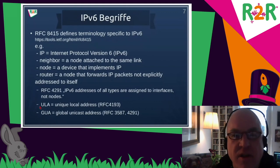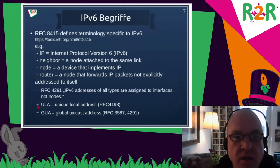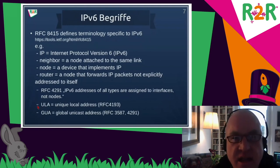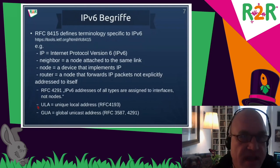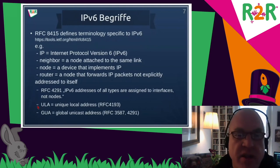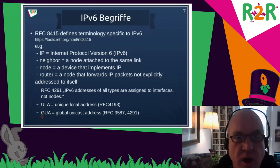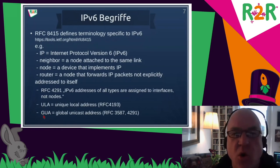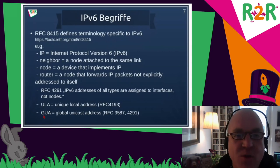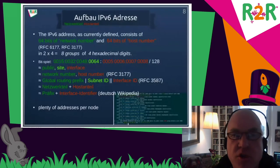We also really need the ULA — Unique Local Address — which covers all addresses within our network. That's like a private address, but it's more than that. And GUA — Global Unicast Address — it's not widely used but it's important. It's a typical V6 thing.